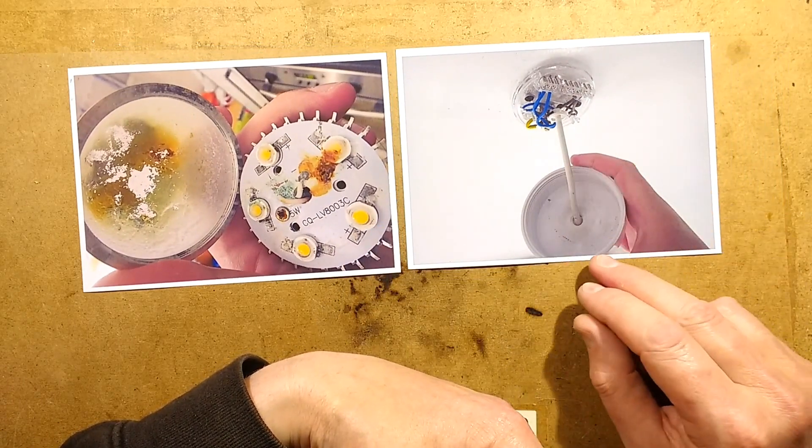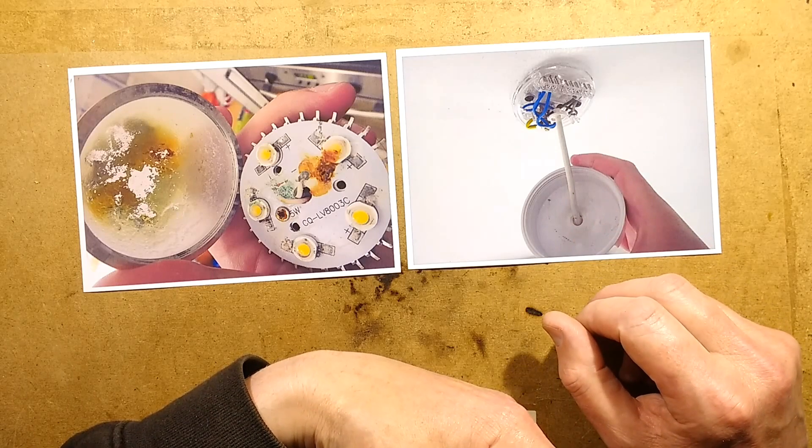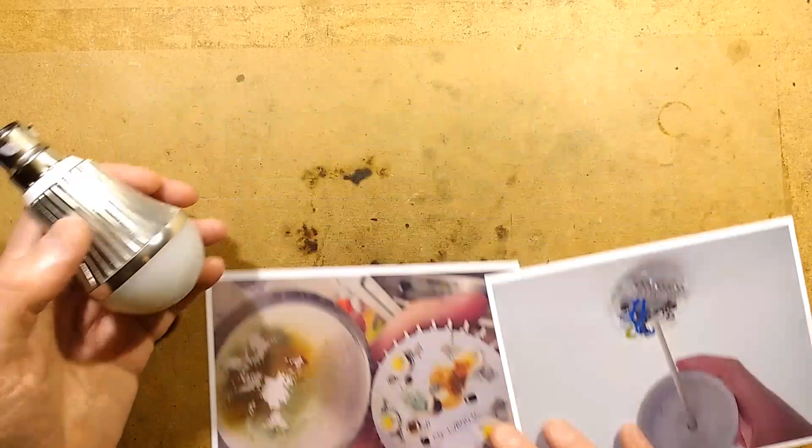And he went back and took a look. He took the ceiling rose off and said there was nothing really obvious inside it. So let's take a look inside the lamp and see what we can find.